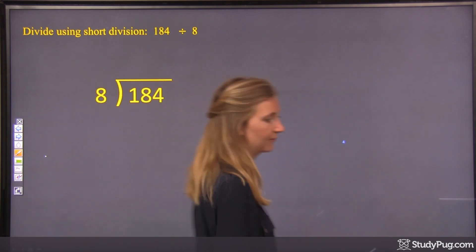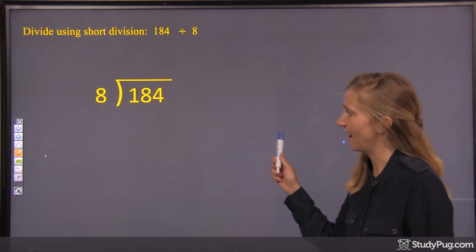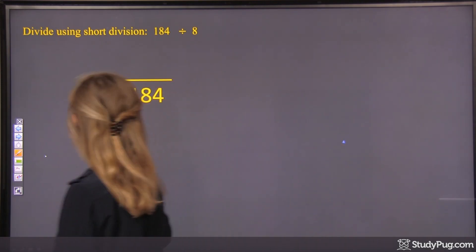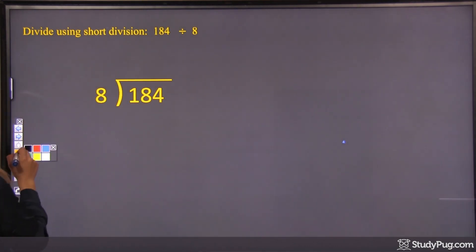Okay, so what's our first step of long division? We divide starting at the biggest place value. We look to the one on the left, the biggest place value.